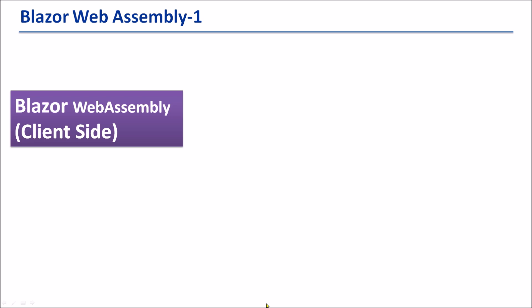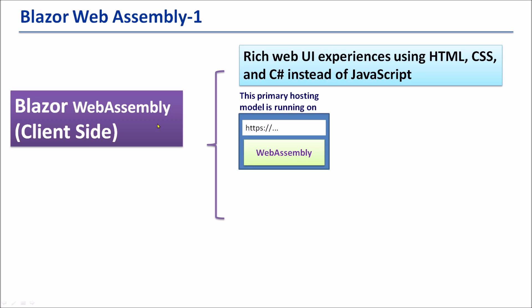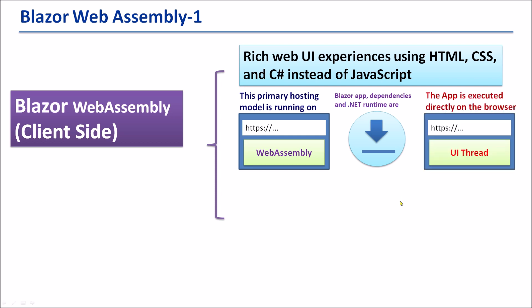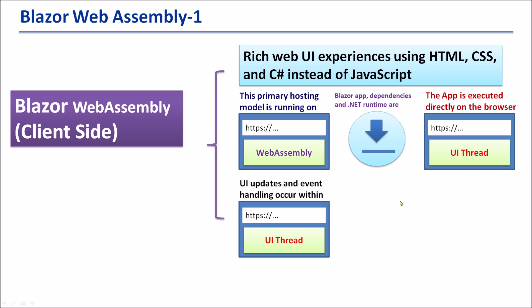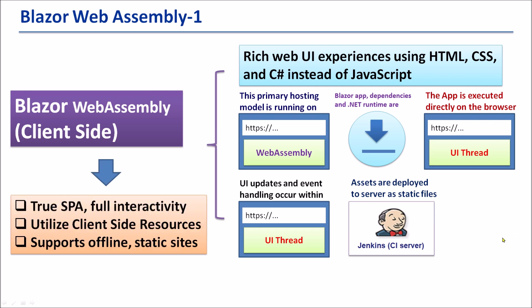Now we have a better understanding of how Blazor works. The Blazor WebAssembly is a rich web UI experience using HTML, CSS, and C# instead of JavaScript. This primary hosting model runs on WebAssembly. Blazor app dependencies and the .NET runtime are downloaded to the browser. The app is executed directly on the browser's UI thread. UI updates and event handling occur within the same UI thread, and assets are deployed to a server as static files.